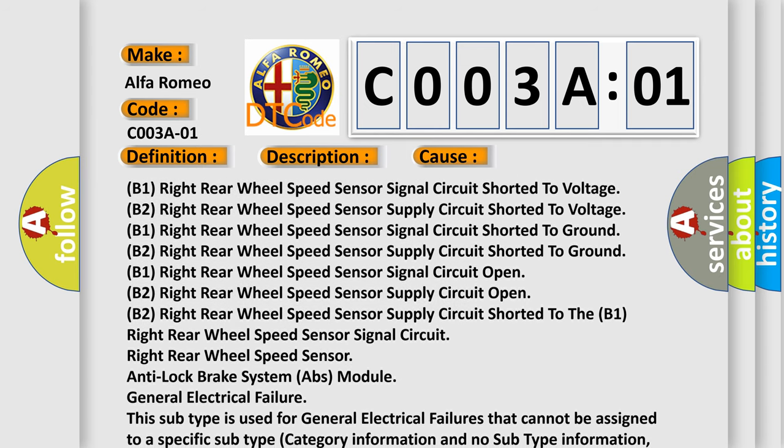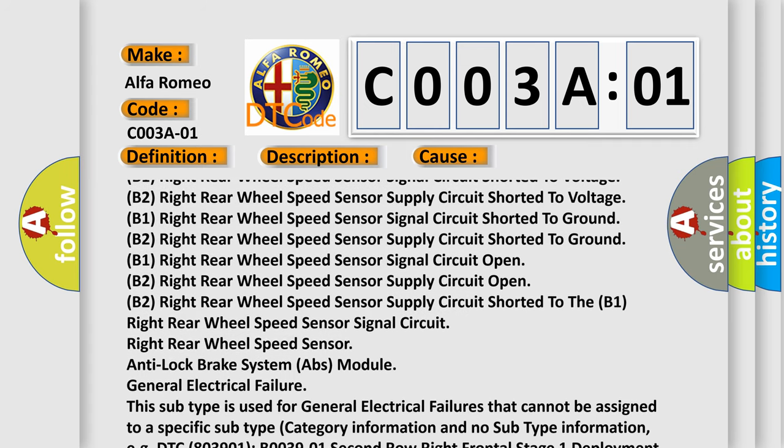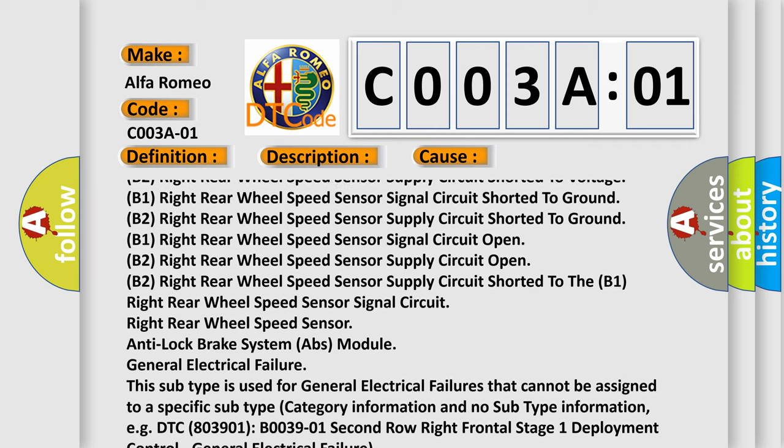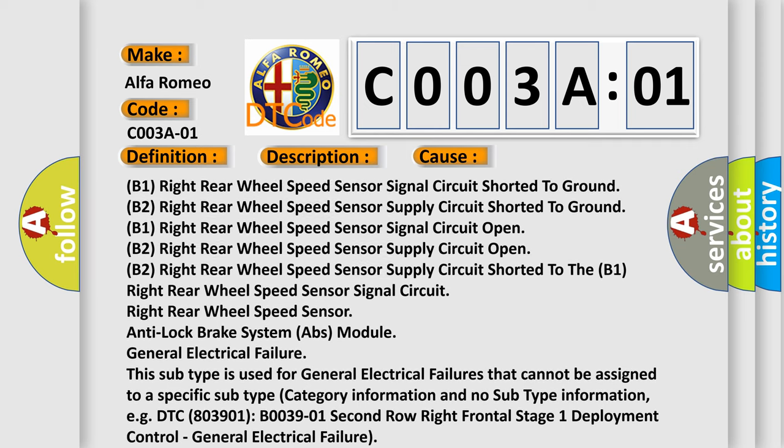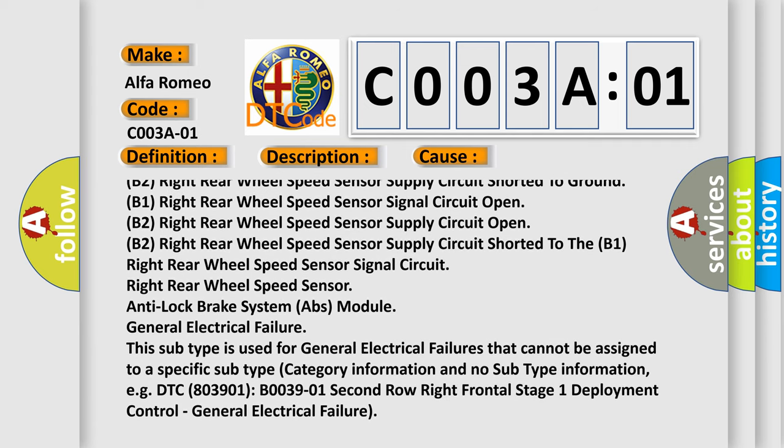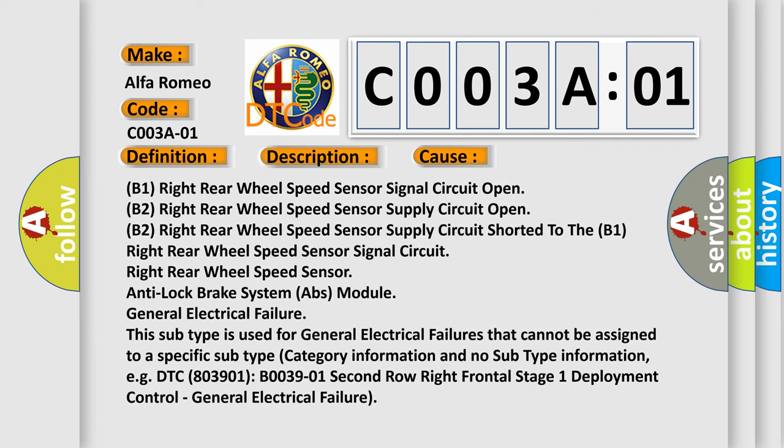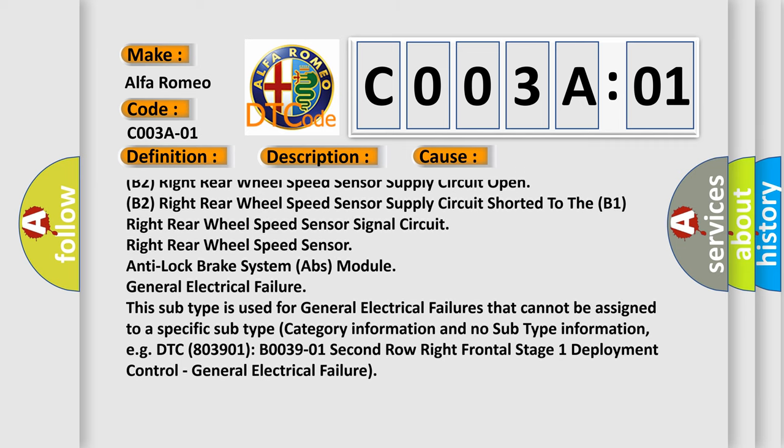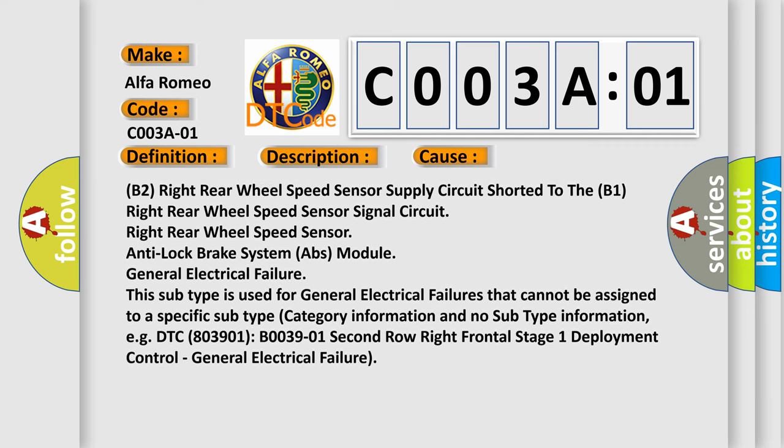Right rear wheel speed sensor signal circuit shorted to ground B2, right rear wheel speed sensor supply circuit shorted to ground B1, right rear wheel speed sensor signal circuit open B2, right rear wheel speed sensor supply circuit open B2, right rear wheel speed sensor supply circuit shorted to the B1 right rear wheel speed sensor signal circuit, right rear wheel speed sensor.